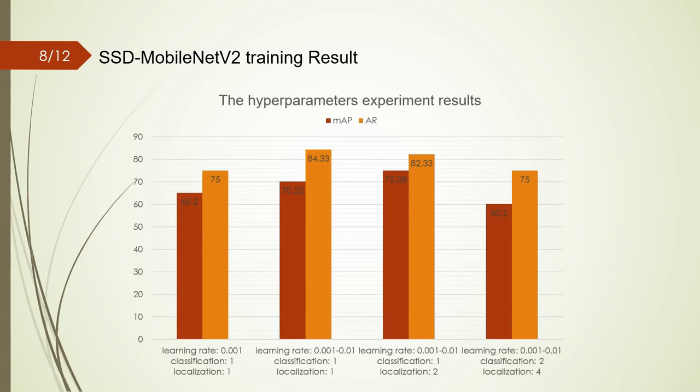Different loss function coefficients were tested. The chart shows the best performance is for the model related to the third column, which uses a variable learning rate and a coefficient of 2 for the classification loss function. The mean average precision of this model is 74% and its average recall is 82%. Although the SSD MobileNet has achieved good accuracy compared to similar networks that have used several states, its classification performance can be improved.